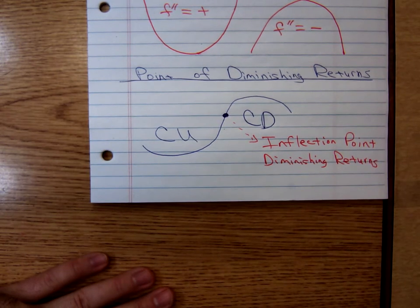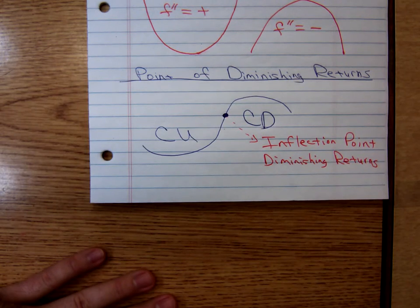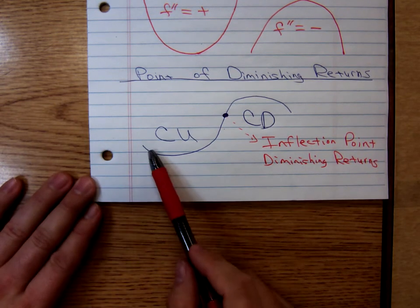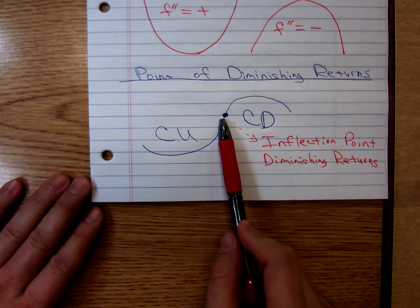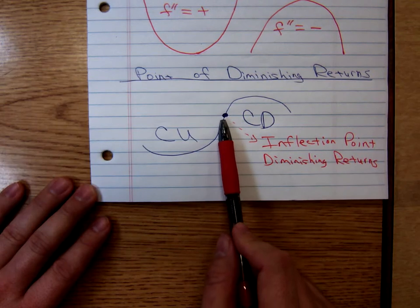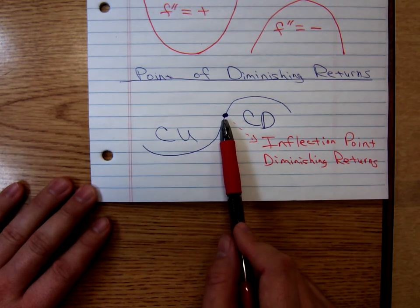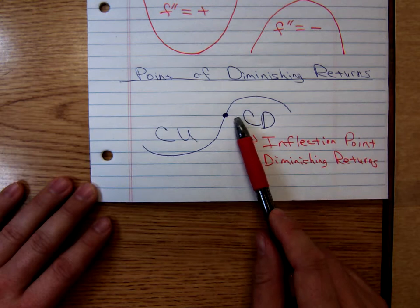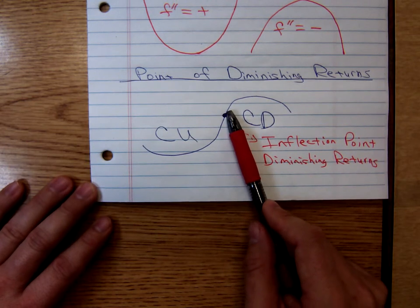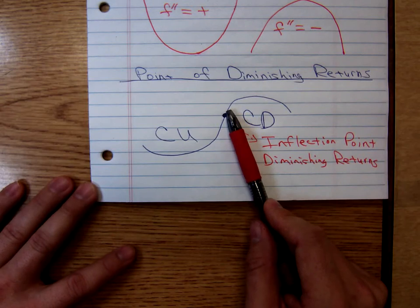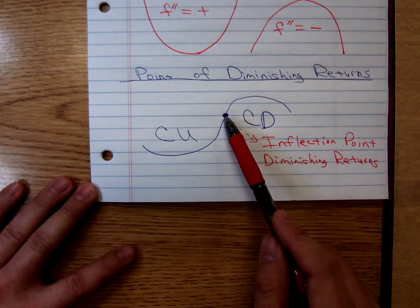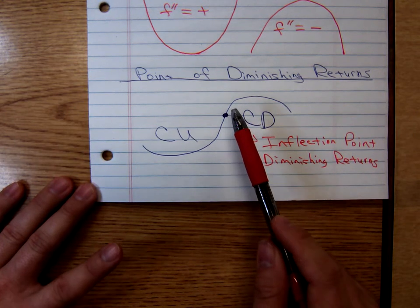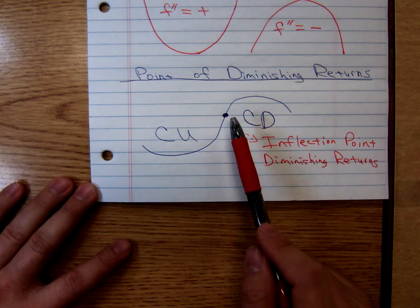A good example of the point of diminishing returns is advertising dollars — that's probably the primary use for it. Think about advertising dollars: up to a point, the more money you spend on advertising, the greater your sales revenue. But eventually, everyone that's going to buy your product already knows about it. If you keep spending and it's an annoying commercial, you could turn people off — they might say they're not going to buy that anymore.